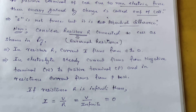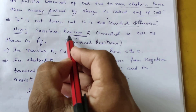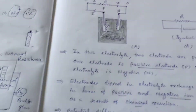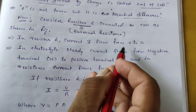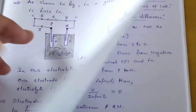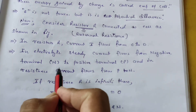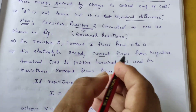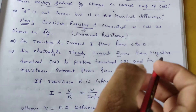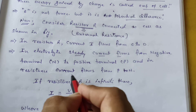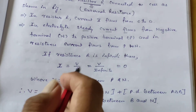Now we will derive the theory. Consider the external resistance R, which is placed outside. Current I flows from C to D. The arrow indicates the direction of current. From the negative terminal to the positive terminal in the electrolyte, and through the resistance in the external circuit.